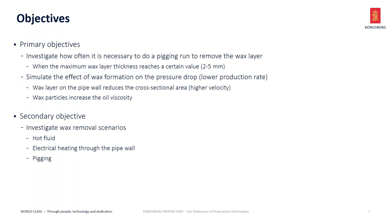The primary objectives of the wax deposition model: there are some different wax models out there, so this is just to set the stage for what we intend to do with our wax model. The primary objective is to investigate how often it is necessary to do a pigging run to remove the wax layer — mainly about pigging frequency. The idea is that we have a limited amount of wax formation on the pipe wall, maybe in the range of two to five millimeters, then you send the pigs through to scrape off the wax, and the wax starts to accumulate again when you produce more.